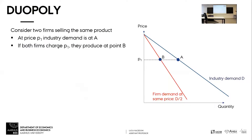This red curve is the demand that each firm faces when each firm is getting at point B — each firm is charging the same price. So if there's just me and you in the market, we charge the same price and we split the market.